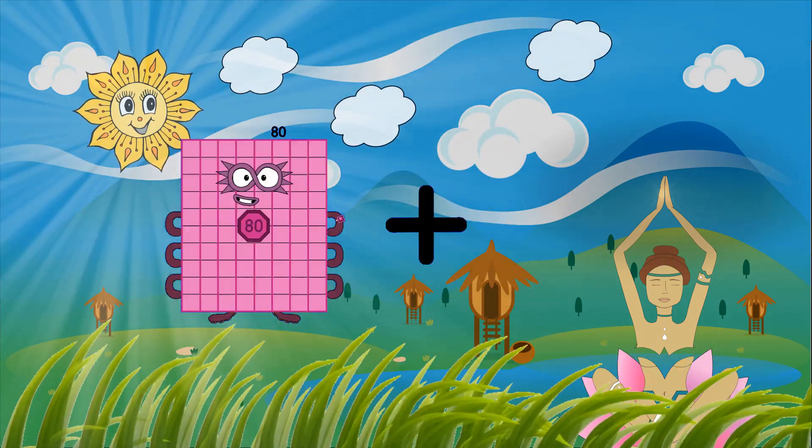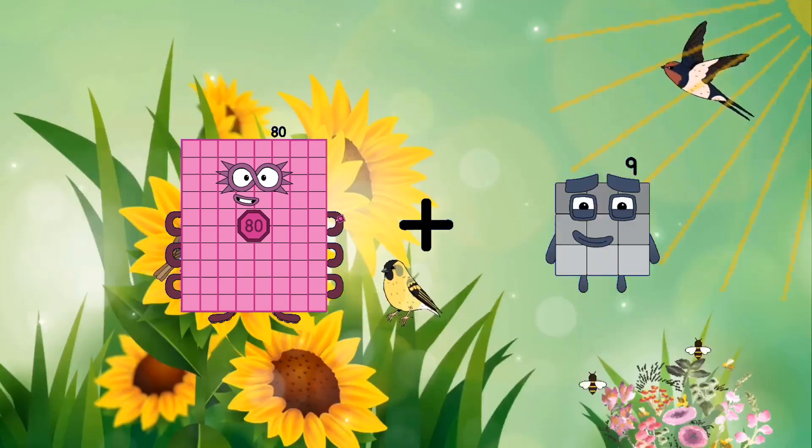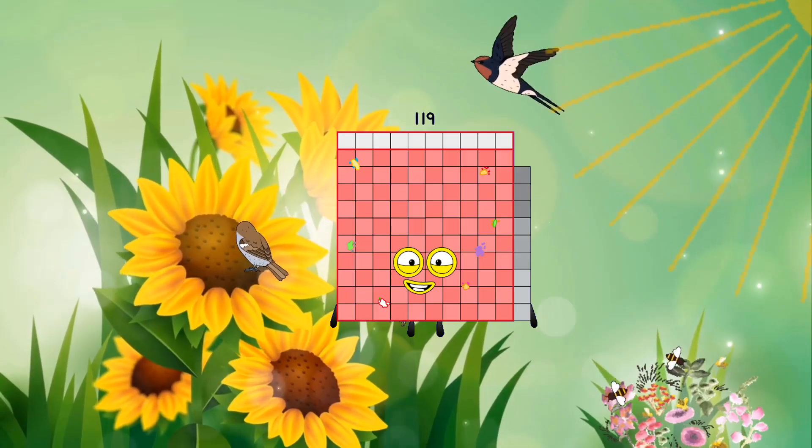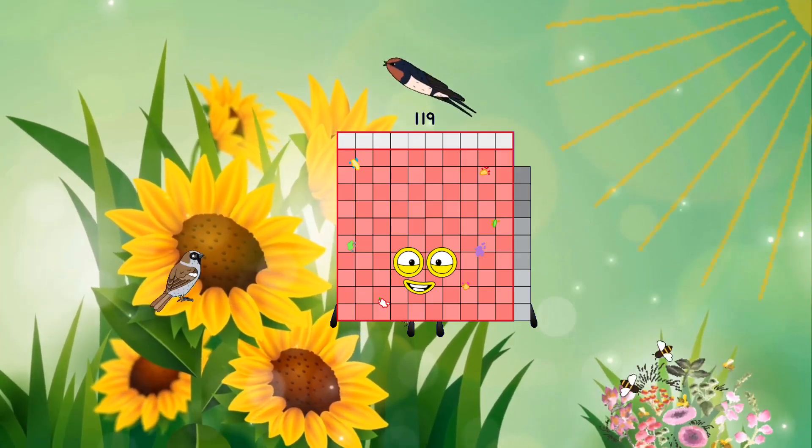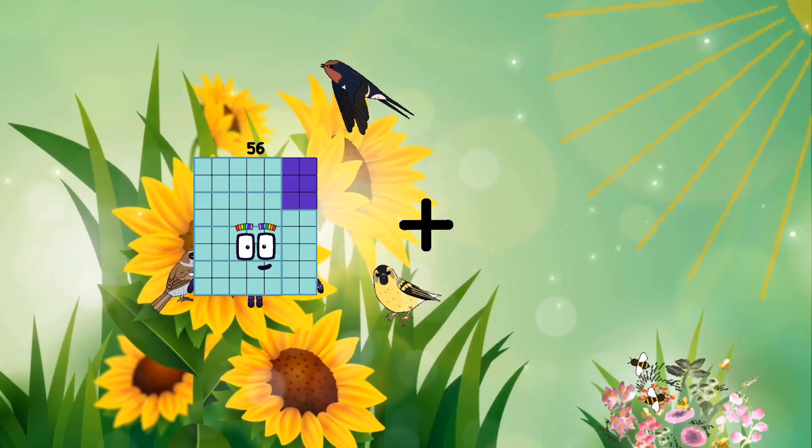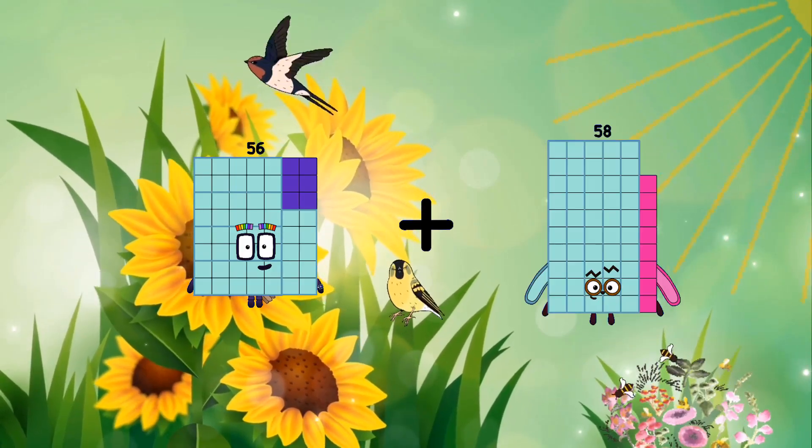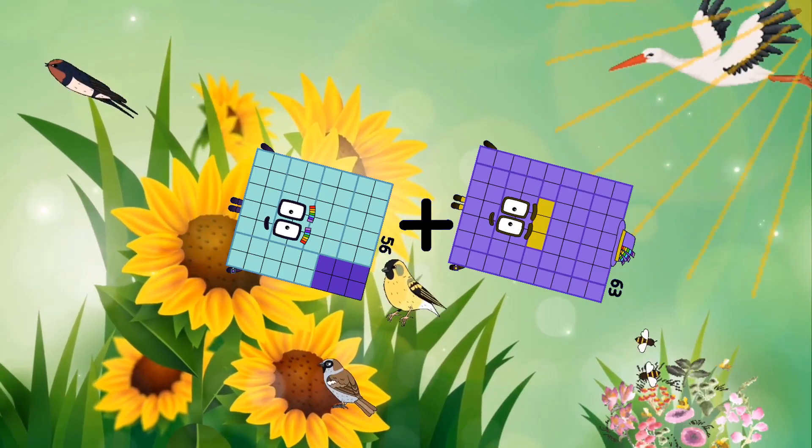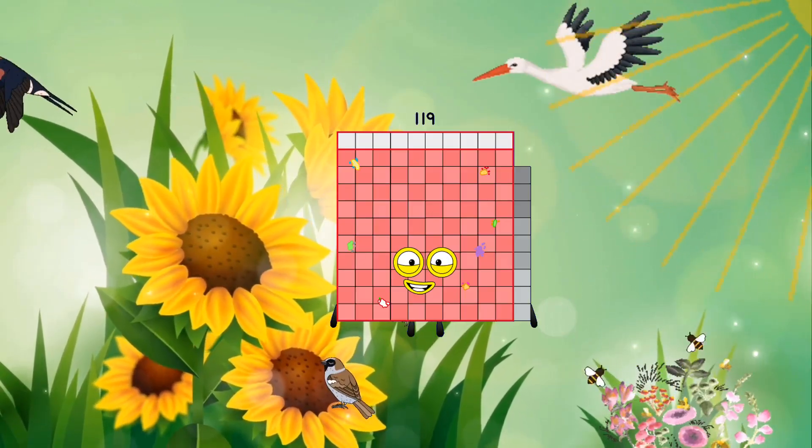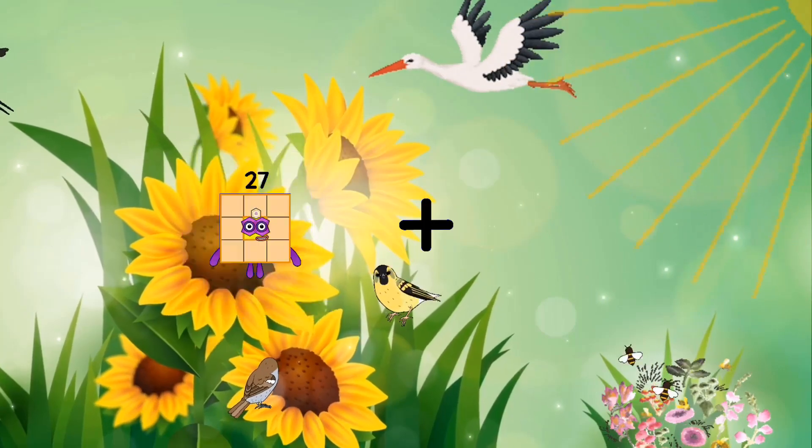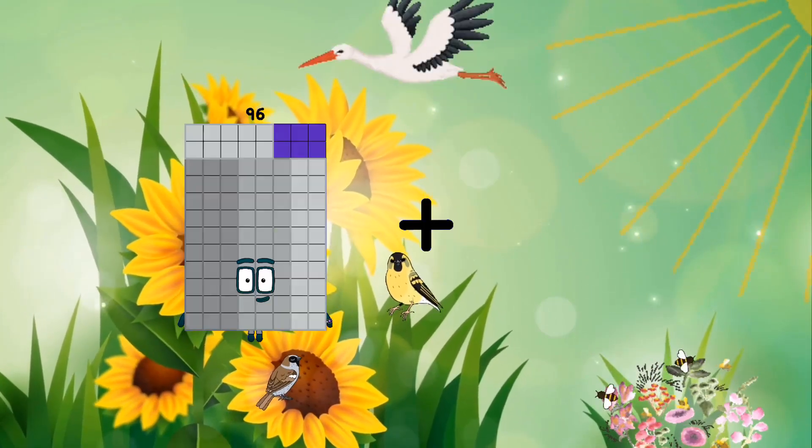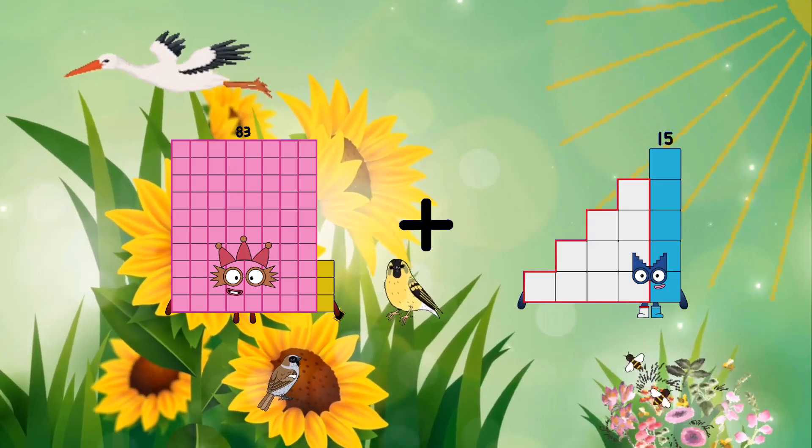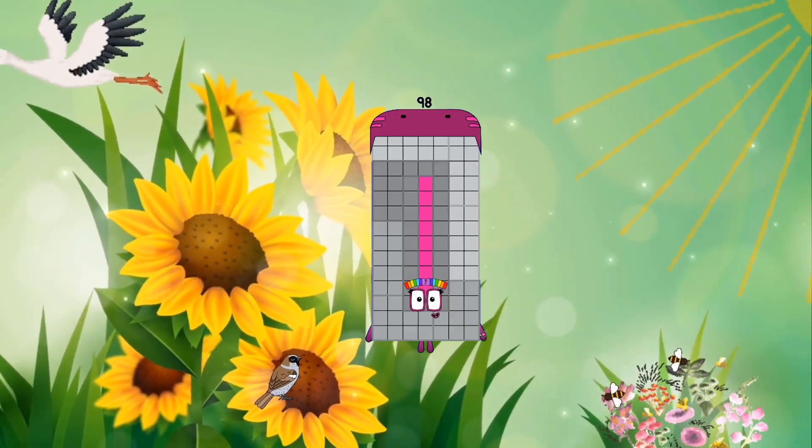80 plus 39 equals 119. 56 plus 63 equals 119. 83 plus 15 equals 98.